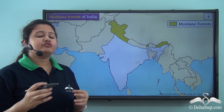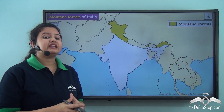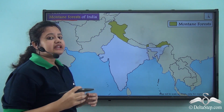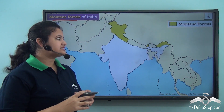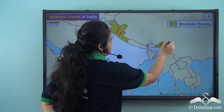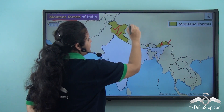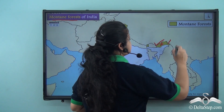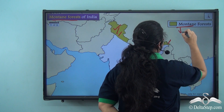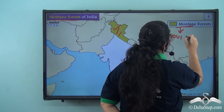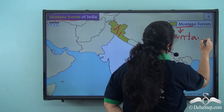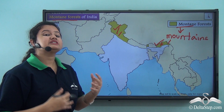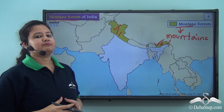The type of vegetation found in any hilly region is known as mountain forest. In the case of India, it exists in the hilly regions of the Himalayas, especially in the north and northeastern part of the country. Mountain forest, as its name suggests, is found in mountainous or hilly regions. Let us now discuss some of the important characteristics of this type of vegetation.